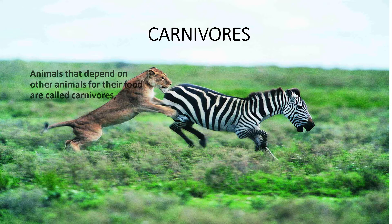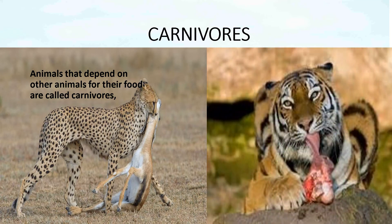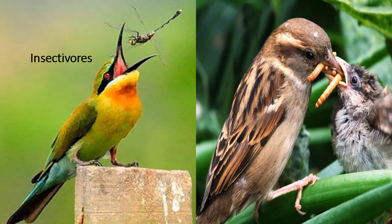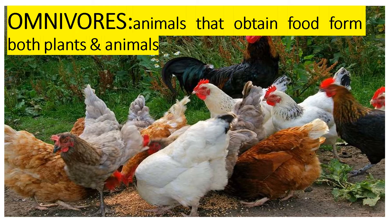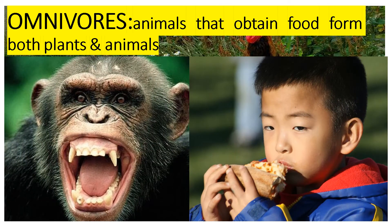Carnivores are animals that depend on other animals for their food. Insectivores are animals that feed on insects. Omnivores are animals that obtain food from both plants and animals. Examples include hens, monkey, chimpanzee, humans, etc., which are all omnivores.